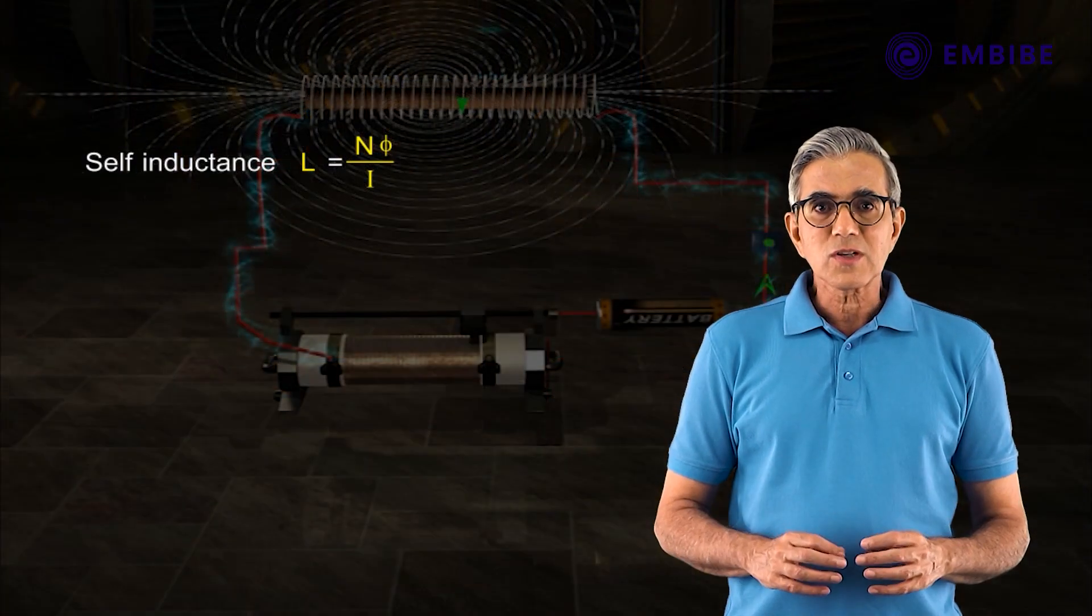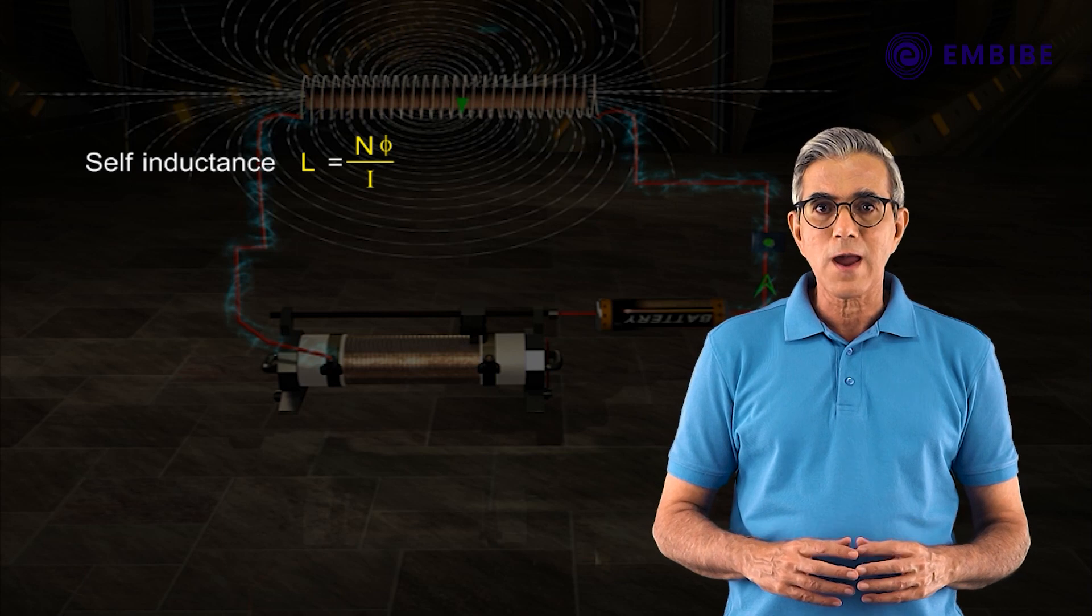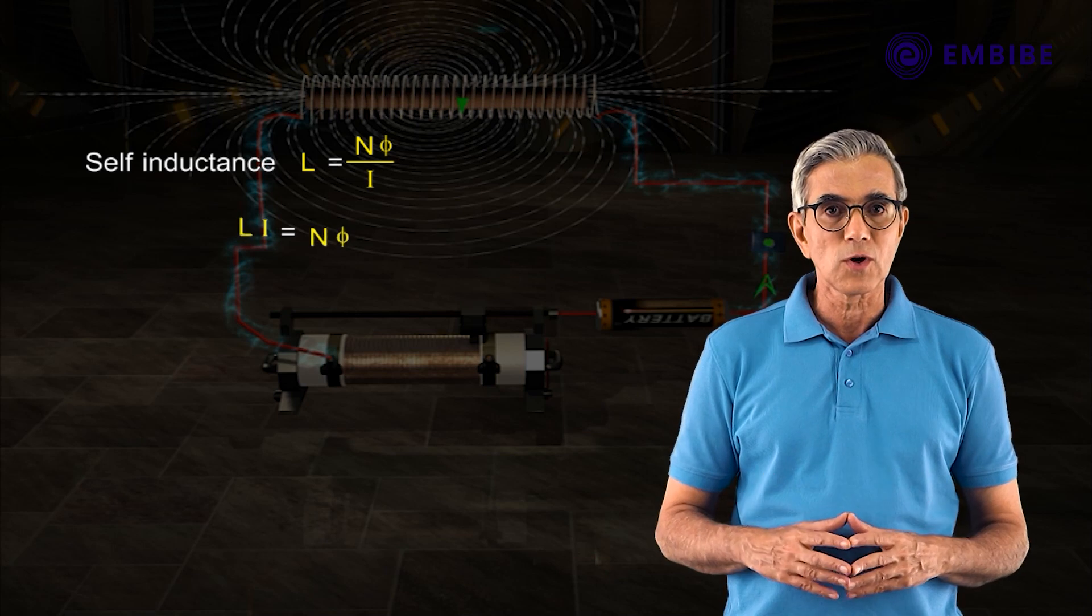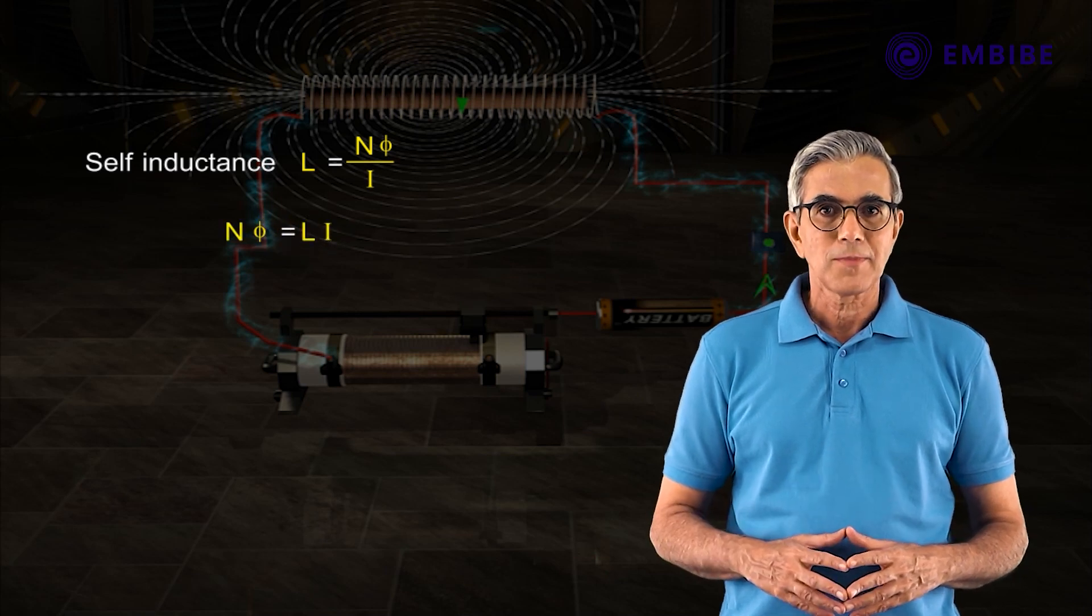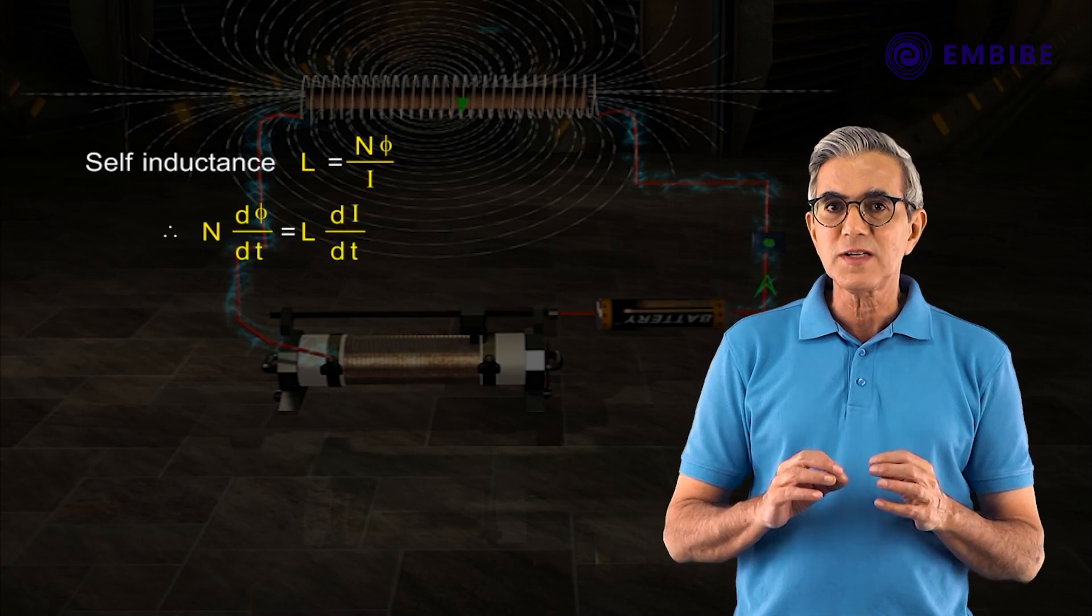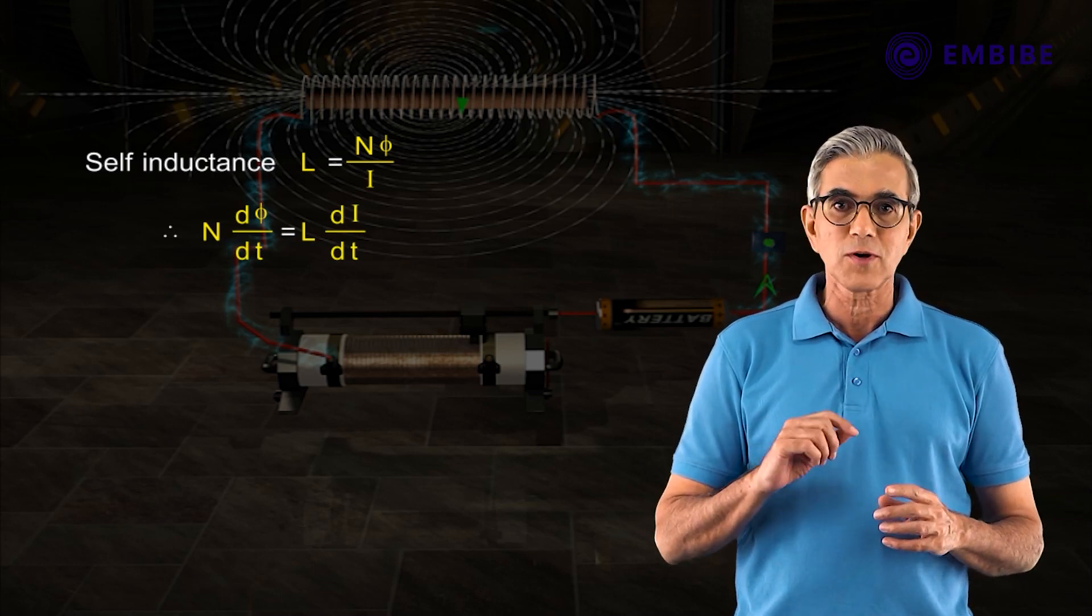The equation self-inductance L = Nφ/I can be written as Nφ = LI. Therefore, N·dφ/dt = L·dI/dt.